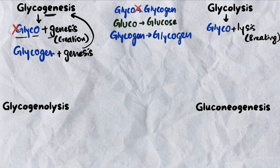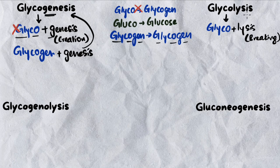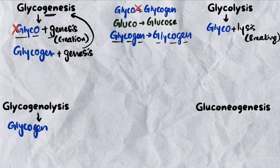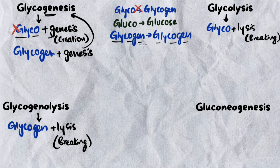What would you call breaking of glycogen using this naming system? Well, glycogen is glycogen, and lysis means breaking. So you would call breaking of glycogen 'glycogenolysis' — glycogen plus lysis. This makes sense: it's breaking of glycogen. And creation of glycogen is glycogenesis.